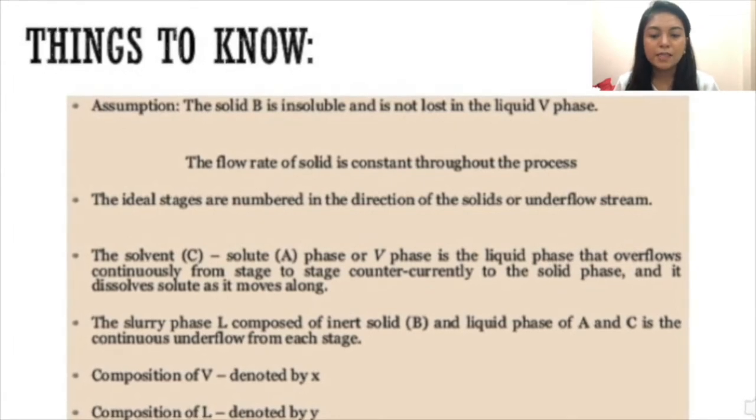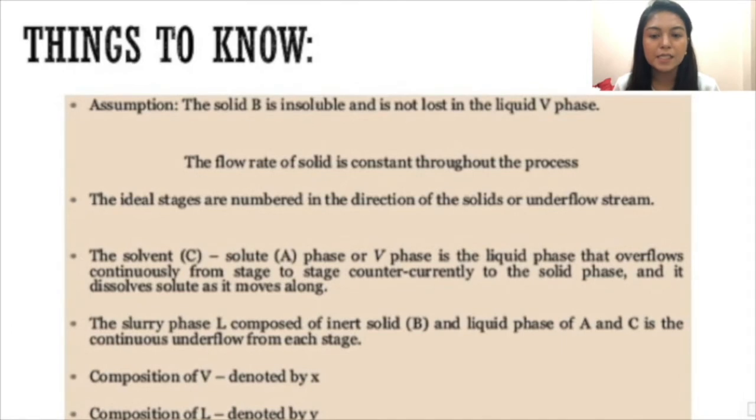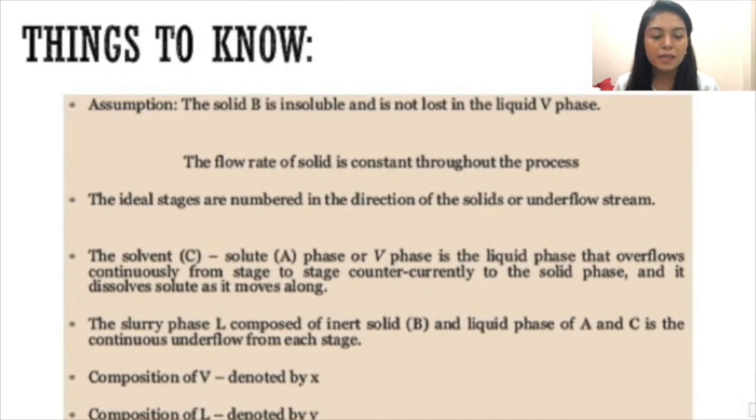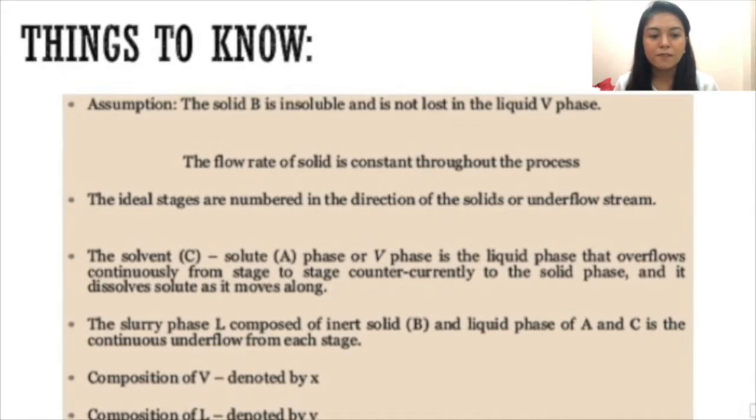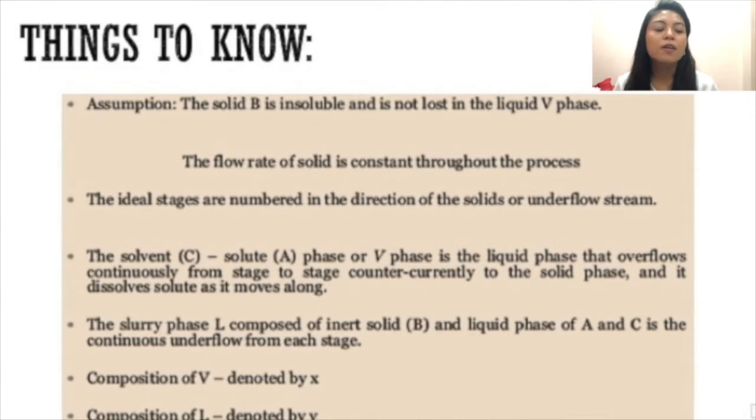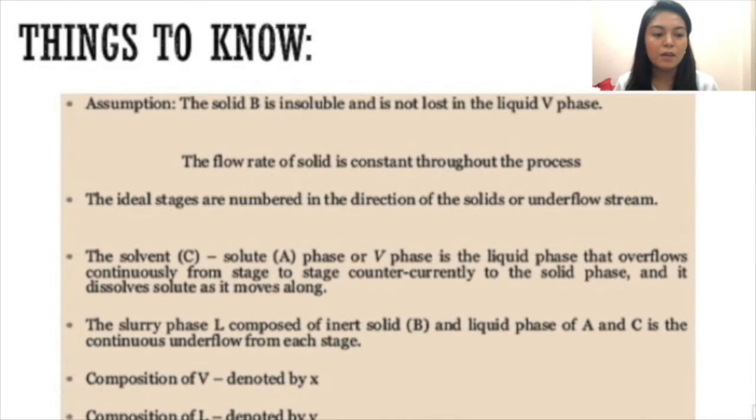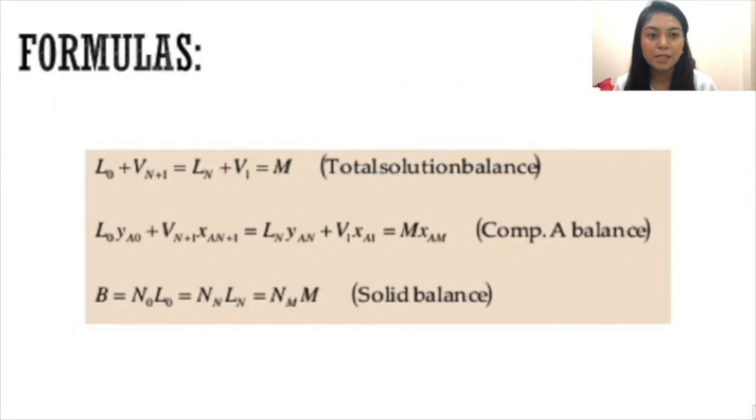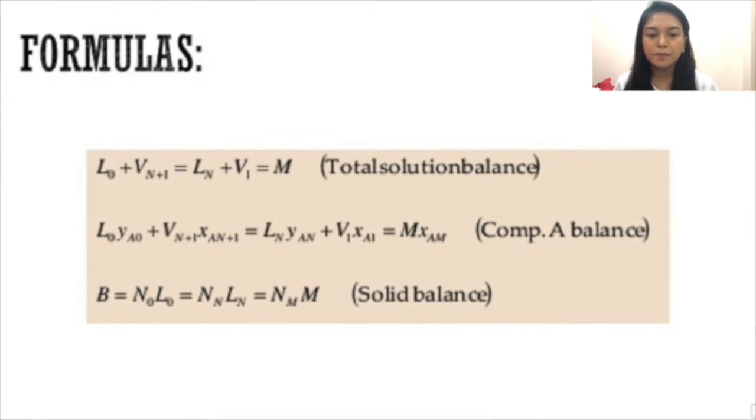For the assumptions, it is assumed that the solid B is insoluble and is not lost in the liquid V phase. The flow rate of the solids is constant throughout the cascade of stages. V is kilograms per hour of overflow solution and L is kilograms per hour of liquid solution in the slurry retained by the solid. These are the important formulas that you need to remember.